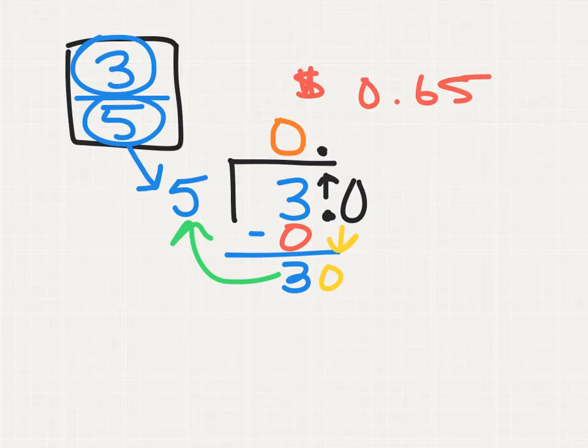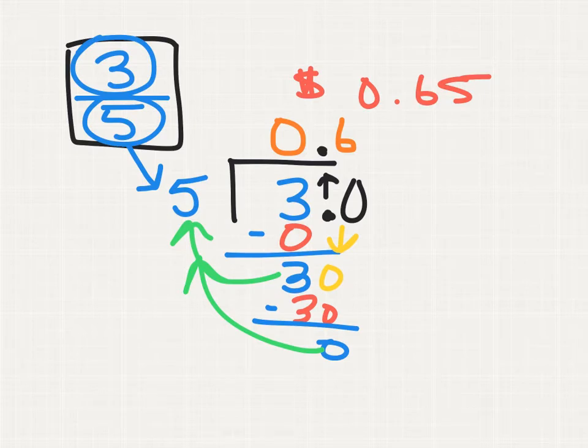And bring down that zero to allow us to continue. Now, how many times can I subtract five from 30? Or how many groups of five can I make from 30? And it appears the answer is six. Six times five is 30. And when I subtract 30 from 30, I get zero. I have zero as a remainder, which is less than five. And I have no more numbers to bring down. I'm finished. So, my decimal equivalent to the fraction three-fifths is the same or equivalent to the decimal 0.6.